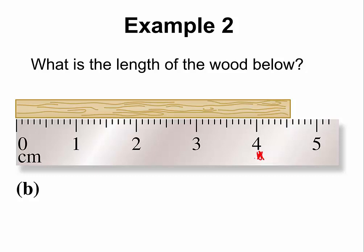We have four here and five here. Between four and five, we have ten divisions — one, two, three, four, five, six, seven, eight, nine, ten. So ten divisions between four and five.